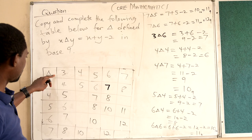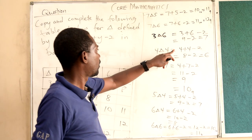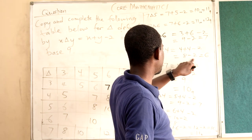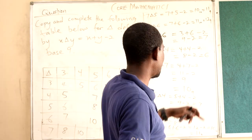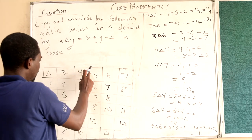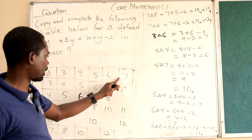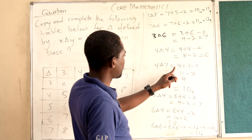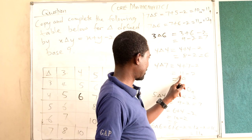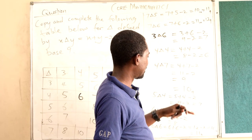4 triangle 4 is 4 plus 4 minus 2, which is 6. And we are looking at 4 triangle 7: 4 triangle 7 is 4 plus 7 minus 2. 4 plus 7 is 11, minus 2, which is 9.